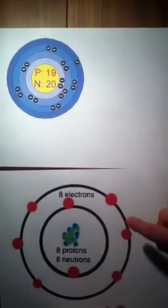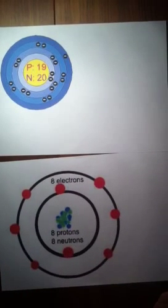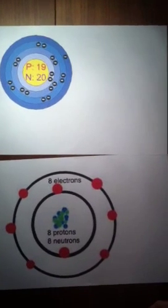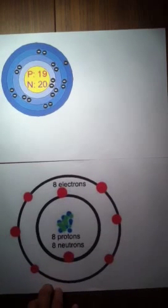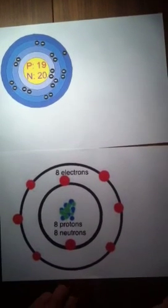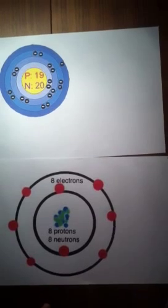Now, these are the two diagrams. This is potassium, this is oxygen. Some differences between them is that oxygen has 8 electrons, potassium has 19, oxygen has 8 protons, potassium has 19, oxygen has 8 neutrons, but potassium has 20.